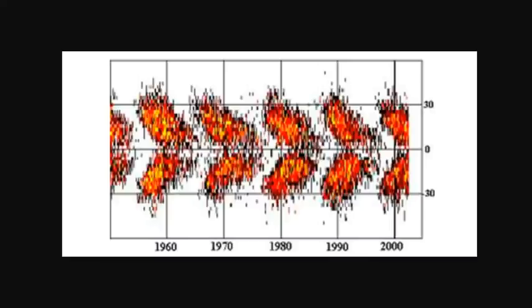What you're looking at is a butterfly diagram. What this depicts is the position of sunspots on the - on the sun, my bad. Time is left to right, and the equatorial position of the sunspots on the sun is up and down.